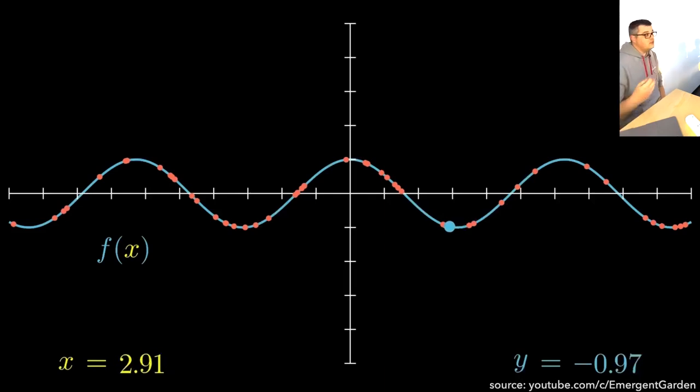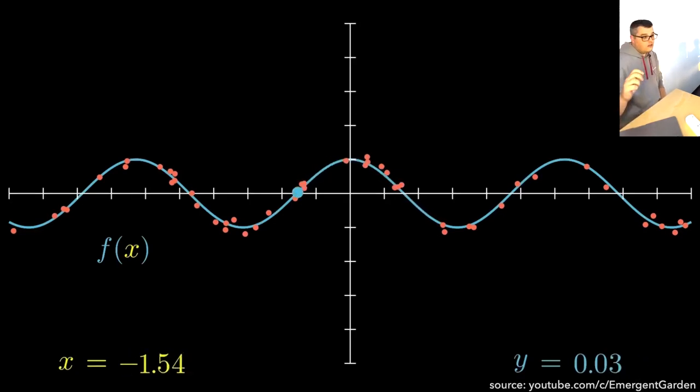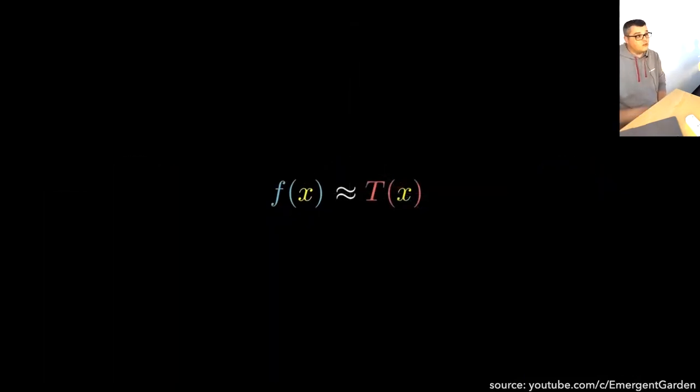We can also do that if the data is a bit fuzzy. So if there's some randomness, we can still get a good approximation of the original function. And with neural networks, we can create a function that closely approximates the original function. The more data we have, the better the approximation will be.